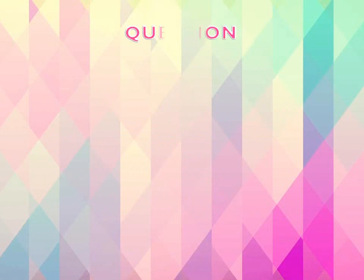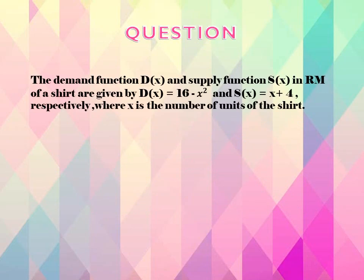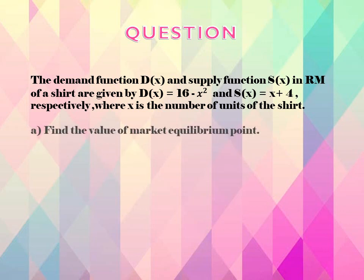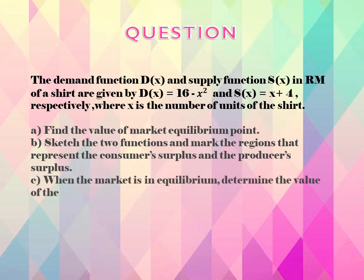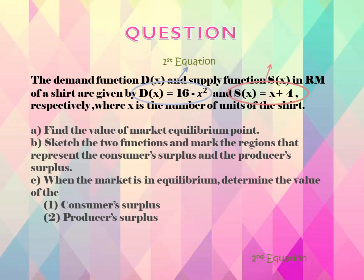The demand function DX and supply function SX in RM of a shed are given by DX equals 16 minus X squared, and SX equals X plus 4 respectively, where X is the number of units of the shed. Part A: find the value of the market equilibrium point. Part B: sketch the two functions and mark the regions representing the consumer surplus and the producer surplus. Part C: when the market is in equilibrium, determine the value of the consumer surplus and producer surplus.